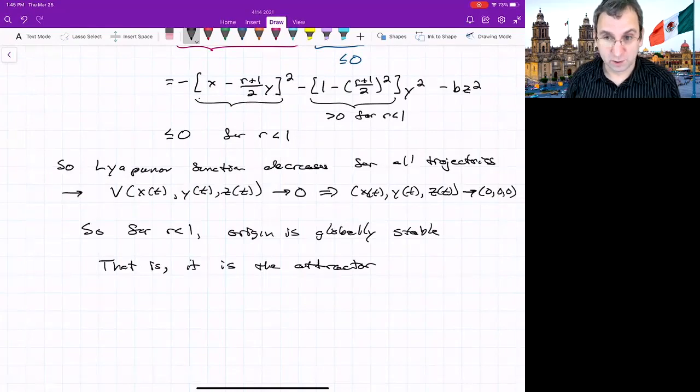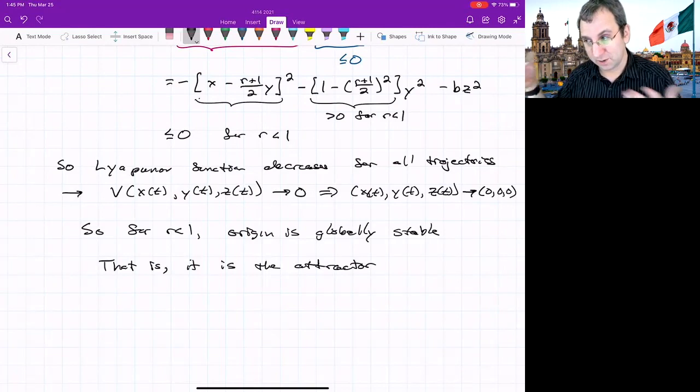We'll look at r greater than 1 when the origin is a saddle, and then look at the sort of sequence of bifurcations that occur and discuss the strange attractor.